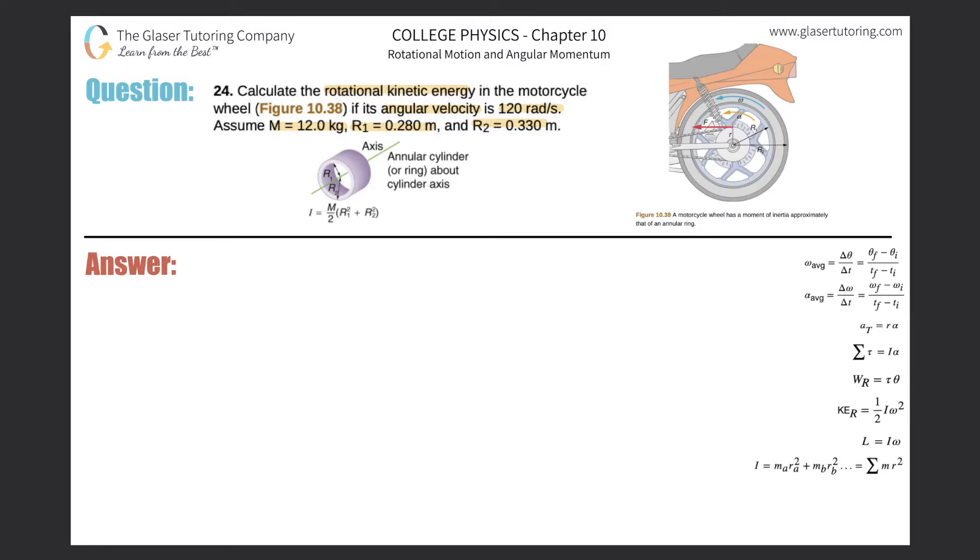Alright, so this problem is fairly straightforward. All we got to think about is how do we find rotational kinetic energy given the angular velocity, and then the mass and radius, which is basically moment of inertia. So we need this formula down here on the bottom right. The kinetic energy of rotation will equal one half times the moment of inertia multiplied then by the angular velocity squared.